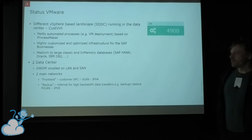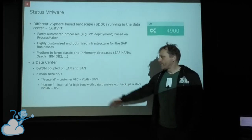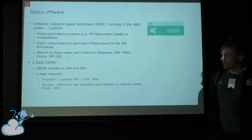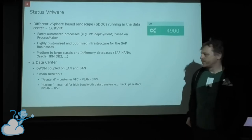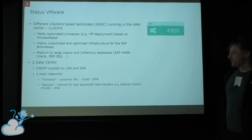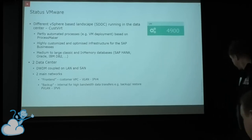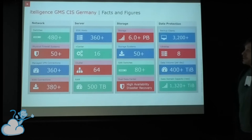Customer virtual machines are connected mainly to two networks: the front-end or customer VPC-like network, which is a classical VLAN based on our switch infrastructure using IPv4 addressing; and a backup internal high-bandwidth network based on PVLAN — Private VLAN, which is an extension to classical VLAN. We use IPv6 in that environment for high-bandwidth data transfers, mainly backup and restore, as well as other high-volume data transfers.